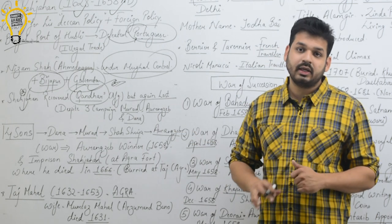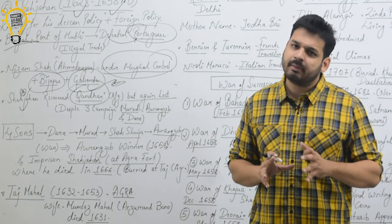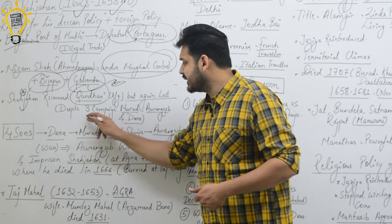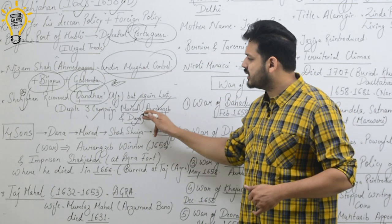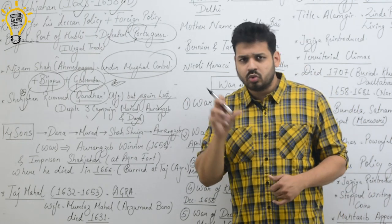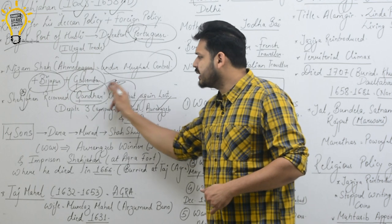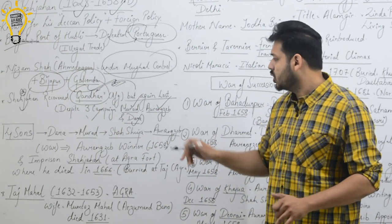Shah Jahan sent three expeditions to recover Kandahar despite sending his three children. All these three expeditions failed. The three sons who went were Murad, Aurangzeb, and Dara. They tried to have expeditions in Kandahar but there was failure. Kandahar was recovered but later it was lost.